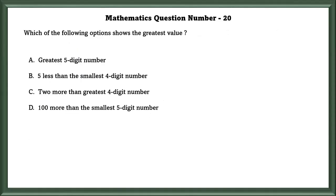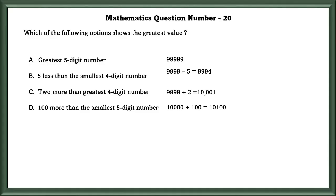Mathematics question number 20: Which of the following options shows the greatest value? A: Greatest 5-digit number, that is 99,999. B: 5 less than the smallest 4-digit number, that is 9,994. C: 2 more than the greatest 4-digit number, that is 10,001. D: 100 more than the smallest 5-digit number, that is 10,100. The greatest value is option A.